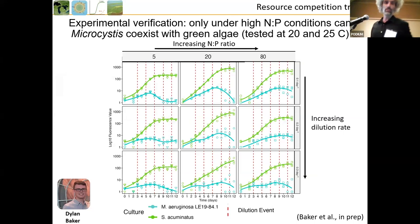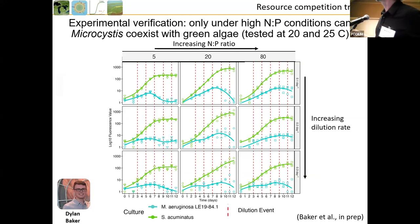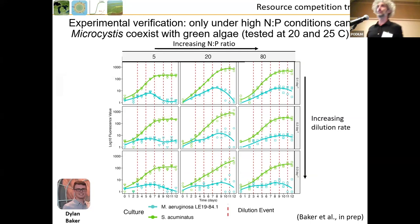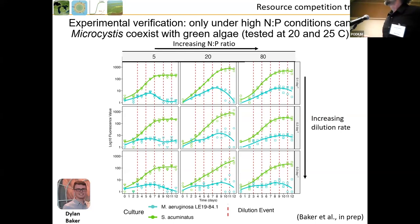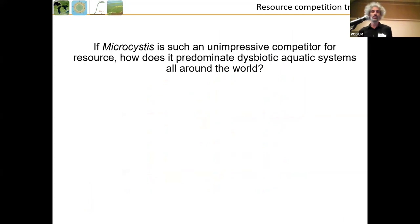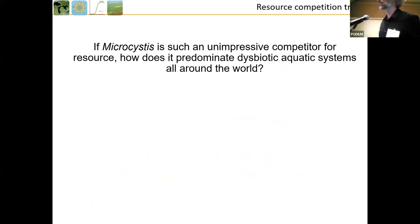When we did experiments under different N:P ratios of 5, 20, and 80, and different dilution rates as an imposed death rate, the blue is Microcystis and the green is the green alga. You can see that only at really high N:P ratios and not too high dilution rates is Microcystis able to maintain itself — it's never able to out-compete. It really sucks at competing for resources, particularly nitrogen. But that's not what nature tells us. If we look at Lake Erie, we see a lot of Microcystis, not a lot of yummy little green algae moving up the food web.